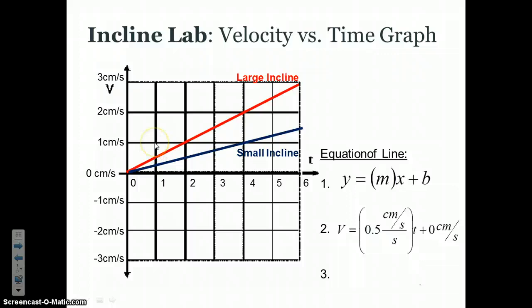Another half a centimeter per second for that one second. Another half a centimeter for the next second. And so on. It's this continual increase of a half of a centimeter per second for each second of motion. So the question is, what is the slope of the velocity versus time graph?